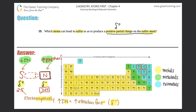Oxygen also works because oxygen is 3.5, which is higher than sulfur's 2.5. So the qualifying atoms are: nitrogen (EN = 3.0), oxygen (EN = 3.5), fluorine (EN = 4.0), and chlorine (EN = 3.0) — all higher than sulfur.